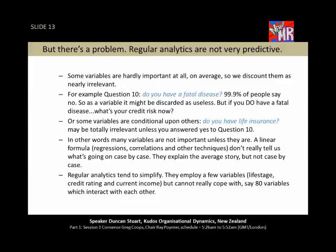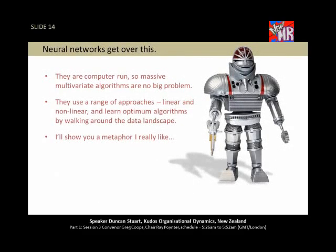Regular analytics also tend to simplify — they employ a few variables like life stage and credit rating, but they cannot really cope with, say, 80 variables which are all highly interactive. Neural networks deal with living, breathing data. It's not treating it as a static thing.